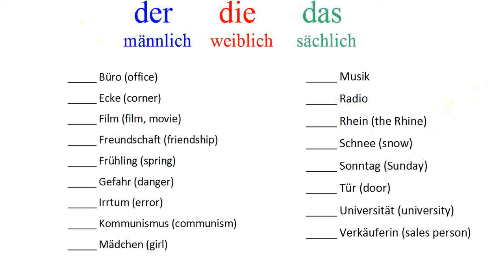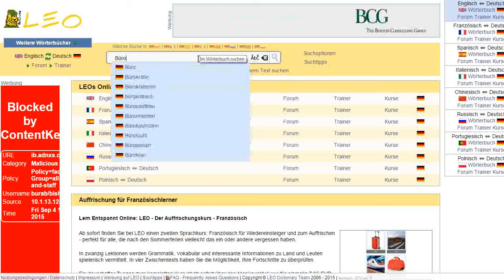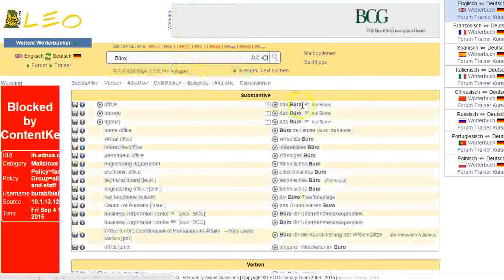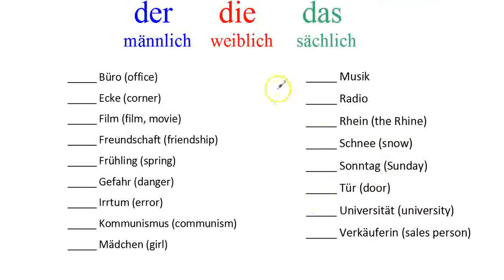Your job is to figure out whether each noun is der, die, or das. You can do this a few ways: one, guess using the hints from the previous slide; two, use a textbook glossary; or three, use my favorite German website, dict.leo.org. Most nouns ending in -o are das, but you can double-check there. Go ahead and look these things up.